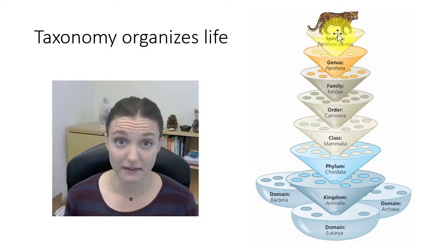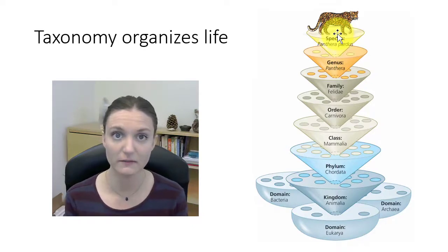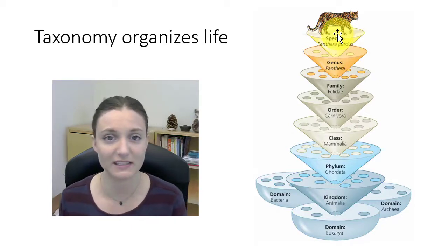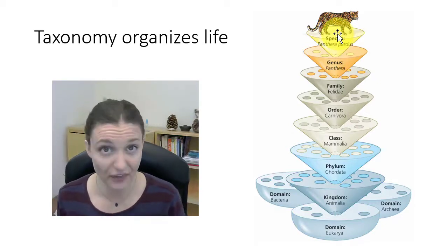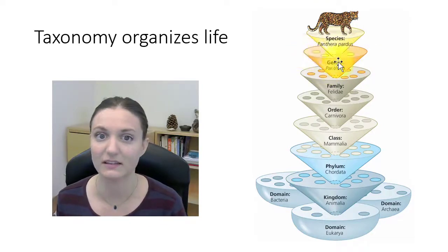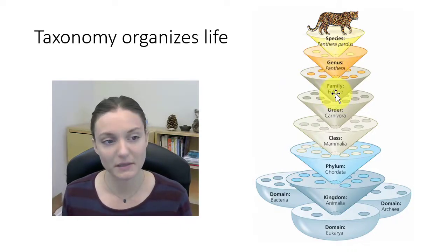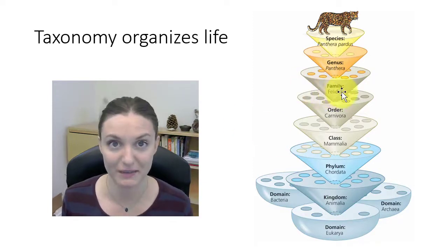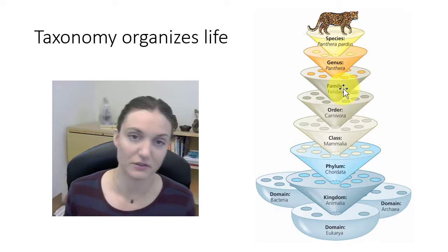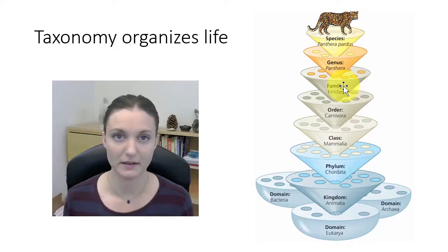Taxonomy and phylogeny are often very closely related to each other, meaning that organisms close together on a phylogenetic tree will probably also be closely related taxonomically — in the same genus or the same family. Taxonomy attempts to describe the hierarchical organization of life, while phylogeny shows the evolutionary relationships. They're oftentimes connected, but not always.